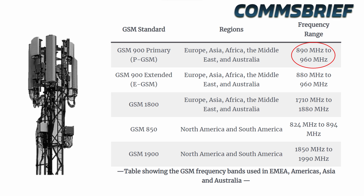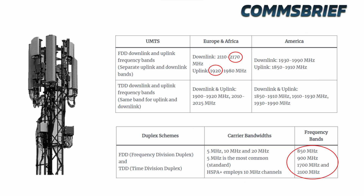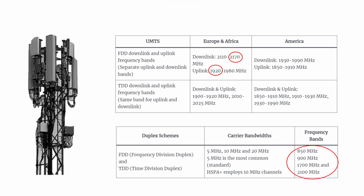Another example is 2G GSM networks, which use lower frequencies. In Europe, GSM networks can use a frequency band from 890 MHz to 960 MHz, though other GSM-compatible frequency bands are also possible. 3G UMTS networks can use 1920 MHz to 2170 MHz in Europe, but other frequency bands including 850 MHz, 900 MHz, and 1700 MHz are also possible.